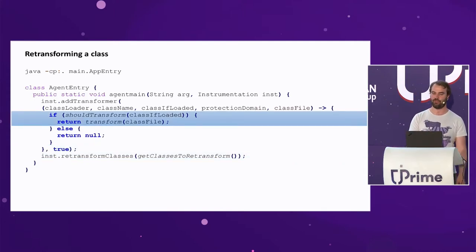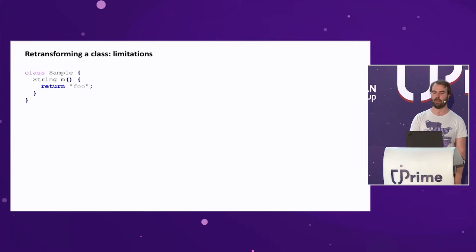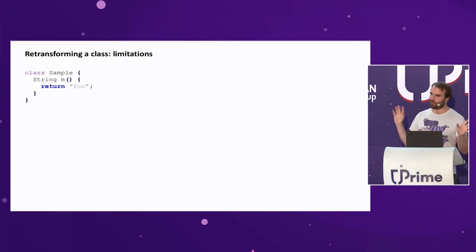To enable re-transformation, you pass true as a second argument to addTransformer and then tell the JVM which classes to re-transform. This is all standard JVM API. As long as you can map one byte array to another that's still a valid class file, you can use it. You still decide whether to transform a class or return null to leave it alone.